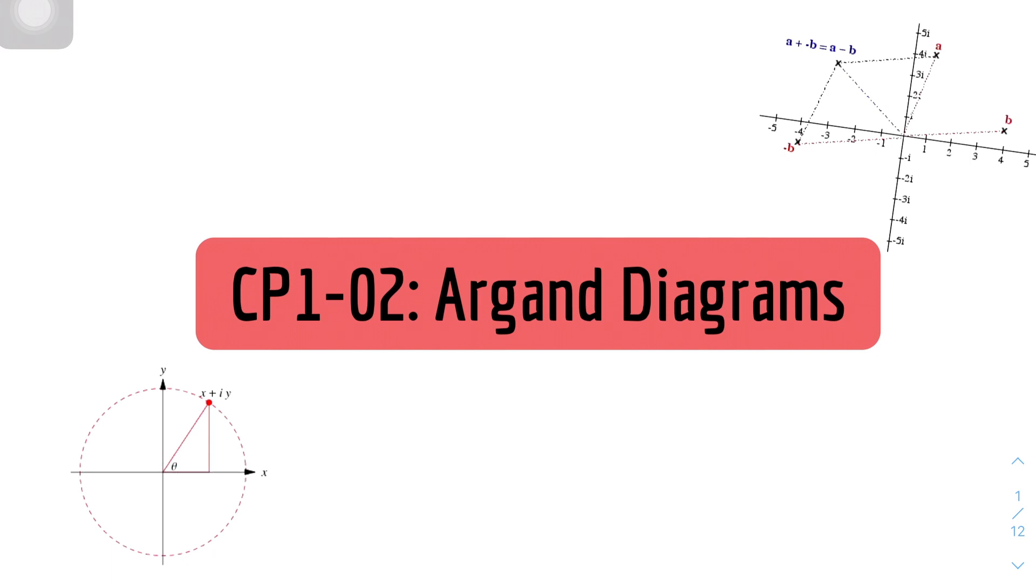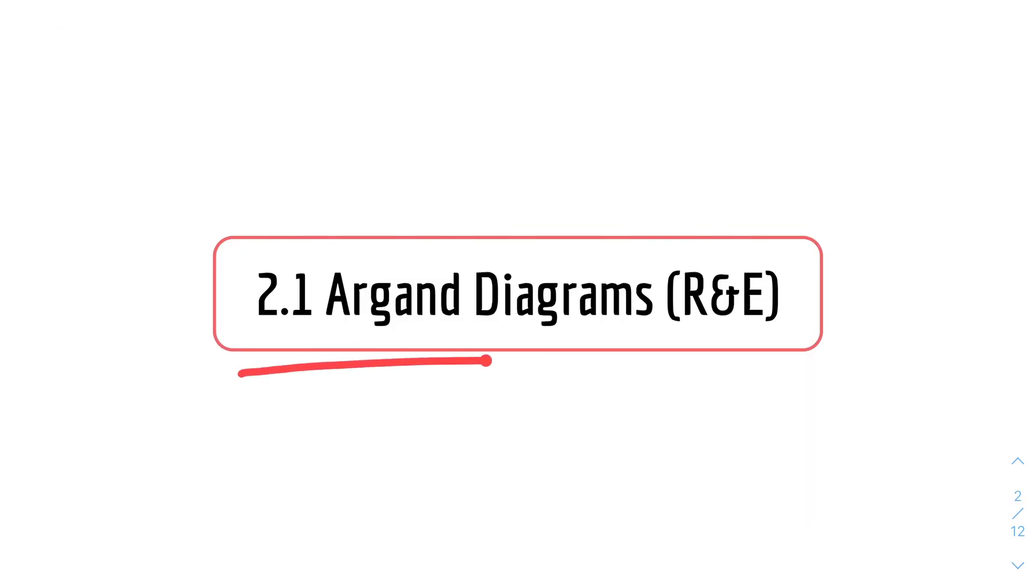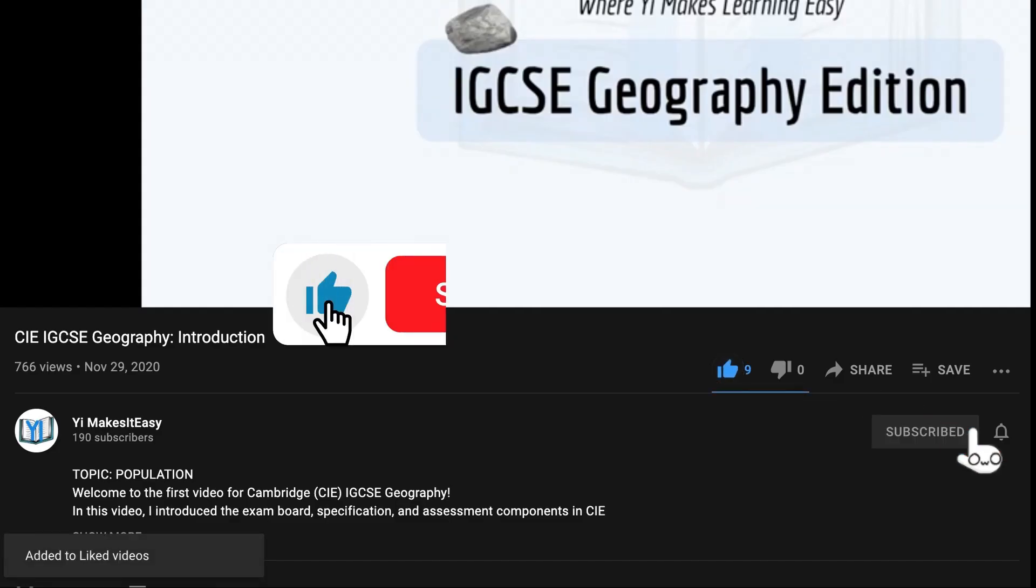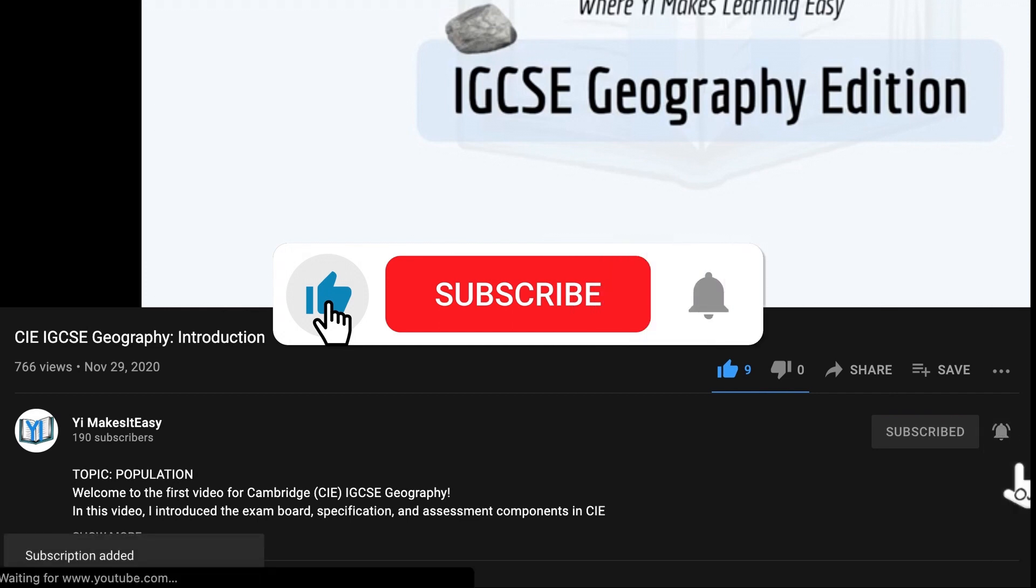Hey friends, my name is Yi and you're watching Yi Mr. Easy. Welcome to a new video for A Level Further Maths. Today we have a new topic for Core 1, Chapter 2, which is Argand Diagrams. We'll start with 2.1 for the rules and examples for Argand Diagrams. Before you get into it, don't forget to leave a like, subscribe and ring the notification bell so you don't miss out on any future videos.